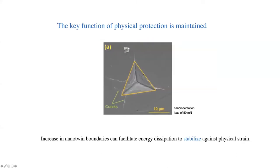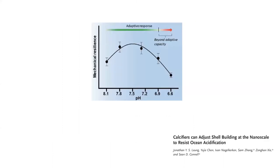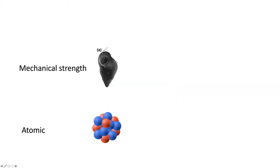And we could test this. So we use a nano indenter, and you can poke these things at very fine scales and measure the crack length, which you can see here. And what we found is they built shells fit for purpose as acidification increased. But up to a point where we get to extreme levels, that adaptive response actually declines.